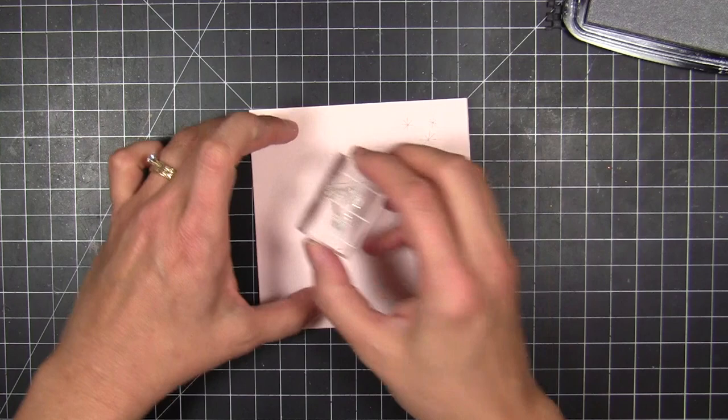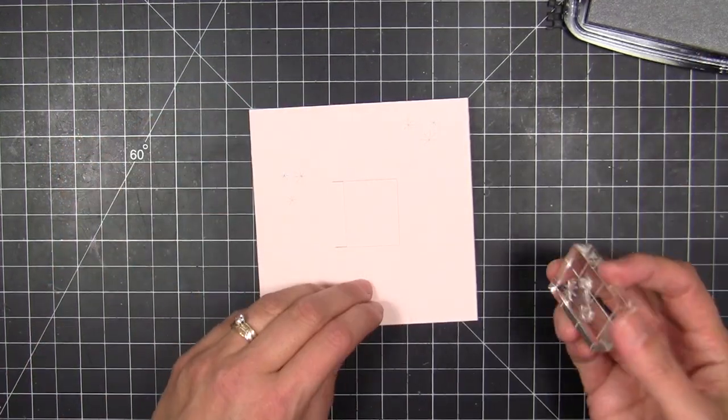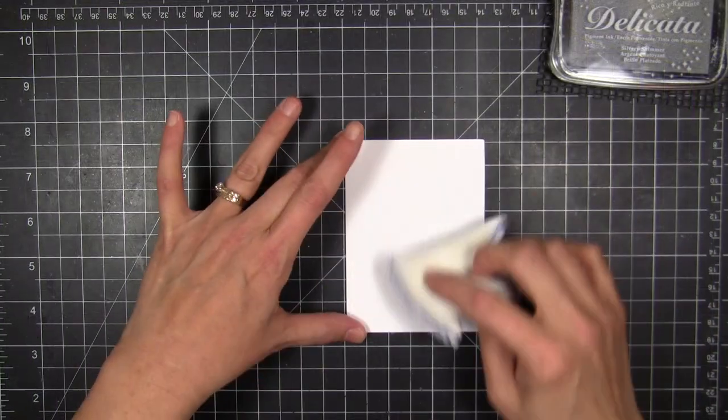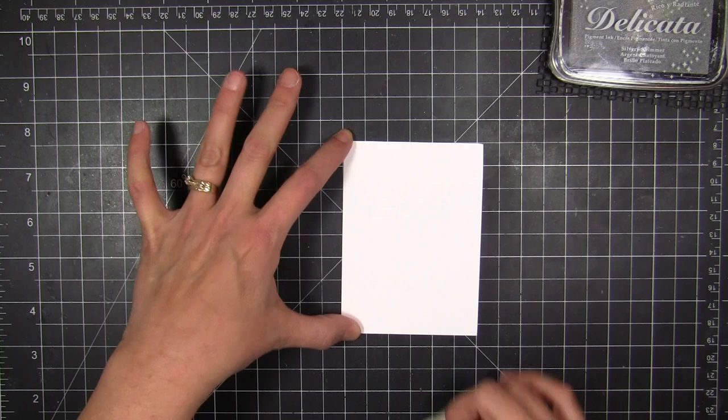So now I'm going to take, while I've got the card closed, I'm going to embellish the front very quickly. I'm just taking some little sparkly snowflake images from the Christmas Scribbles stamp set and inking over the top with some Delicata silver ink. I'll set that aside for a minute.